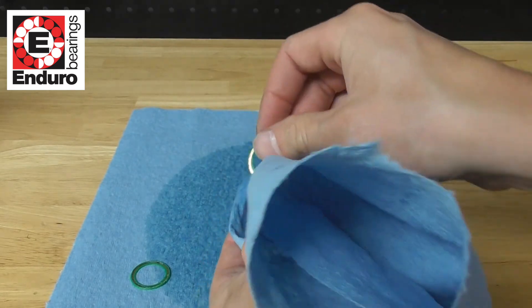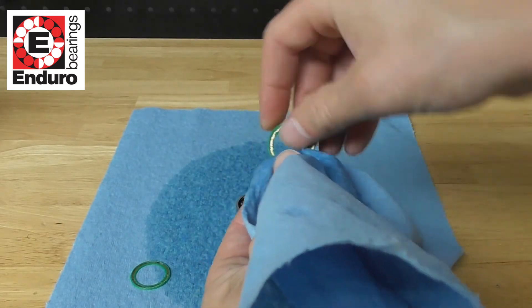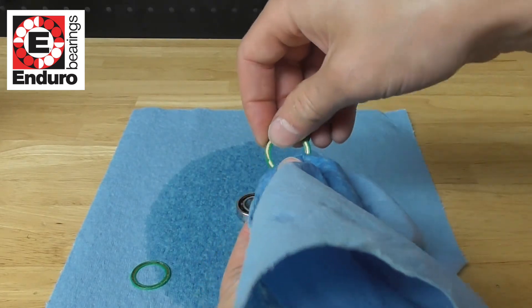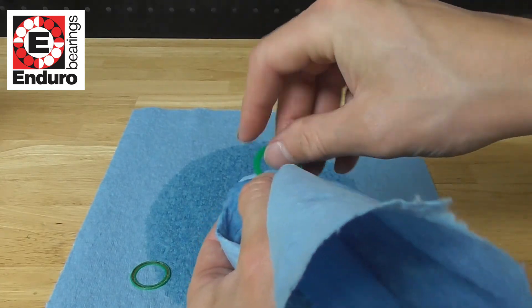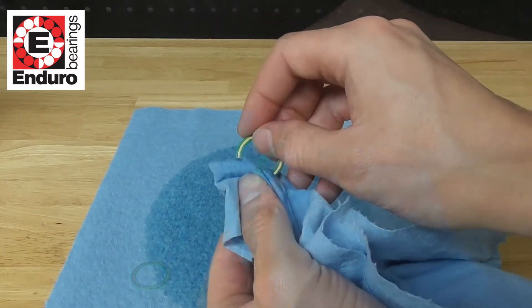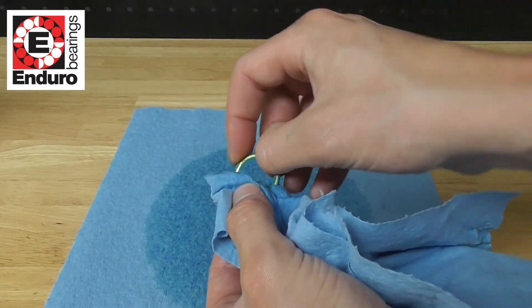Wipe off the remaining grease and contaminants from the seal. Exercise caution not to bend the seal while doing this. Repeat the process on the other seal.